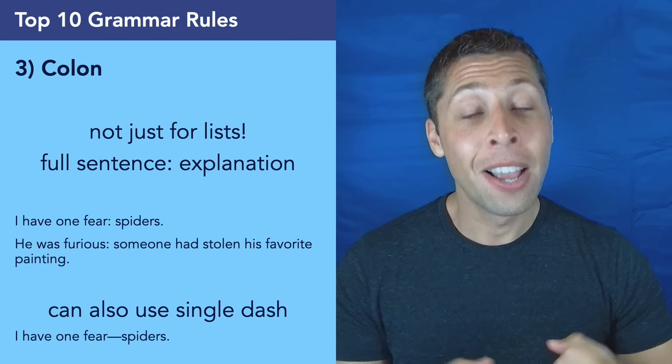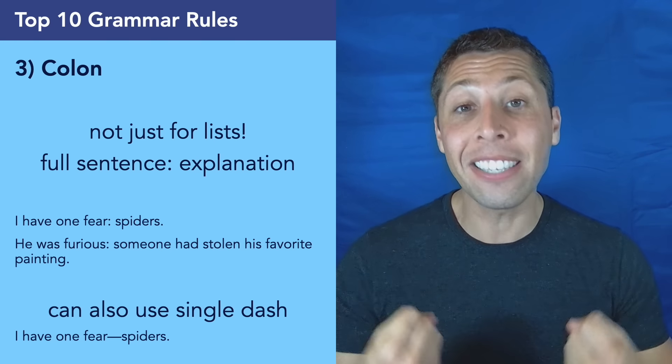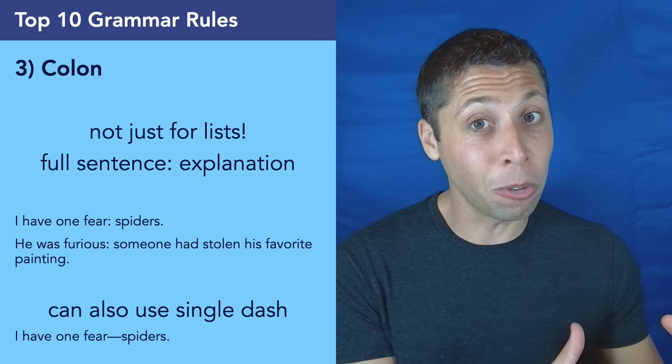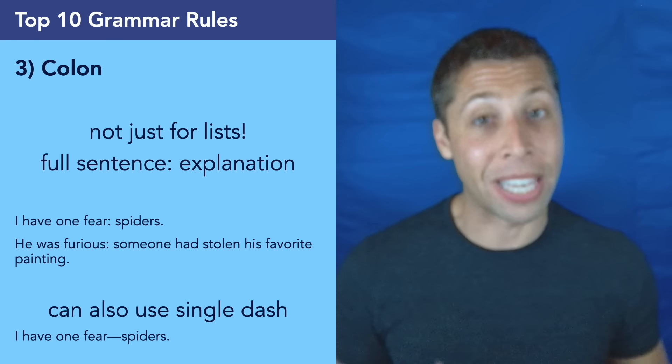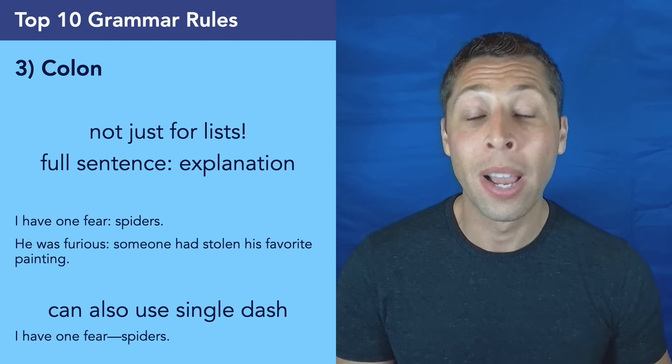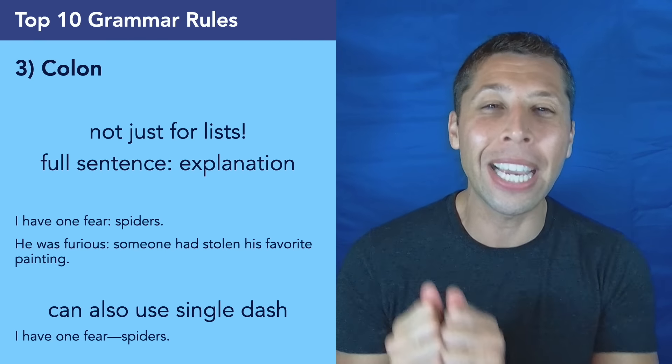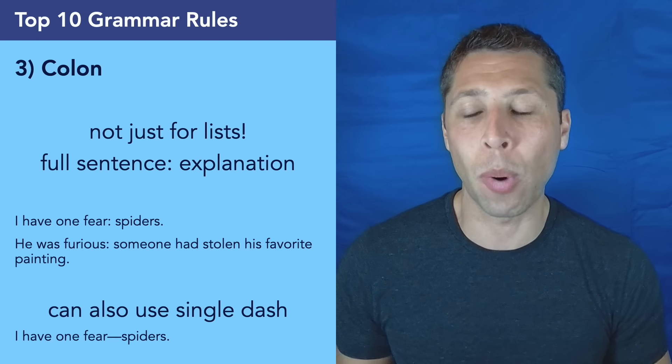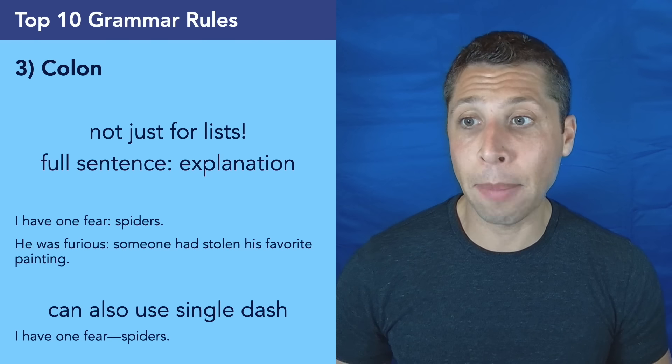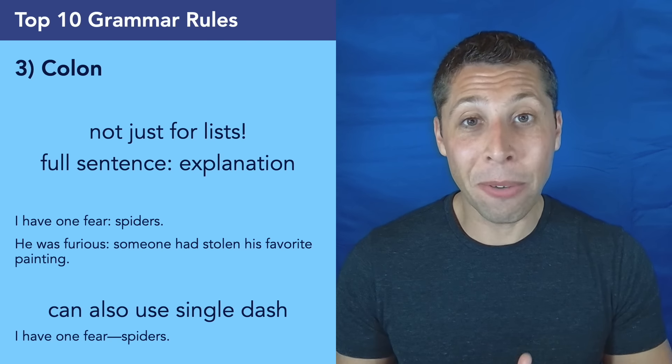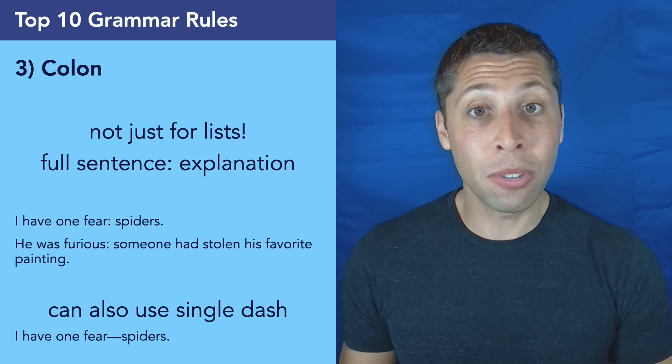Before the colon, we need to have a complete full sentence. After the colon, we can have lots of different things. We can have a sentence. We can have just one word if we really want to. And usually that second part is going to explain or answer some sort of implied question from the first part. So you can see in the examples, I have one fear. That's a sentence. What is that one fear? Spiders. He was furious. That's a sentence. What was he furious about? Someone had stolen his favorite painting.